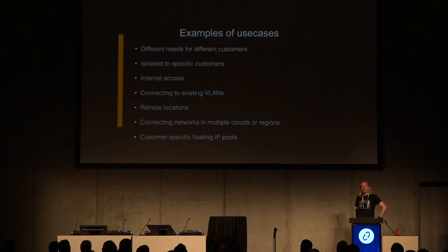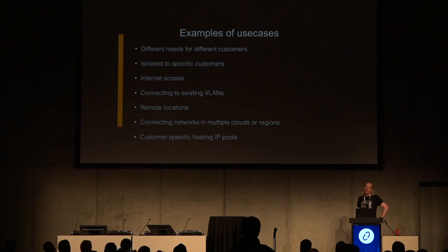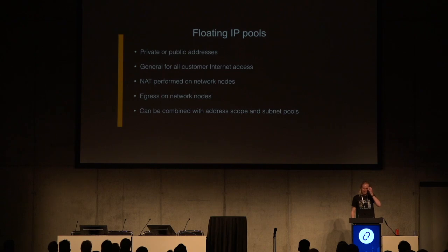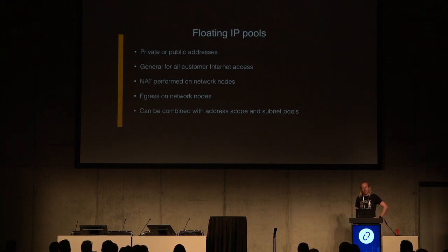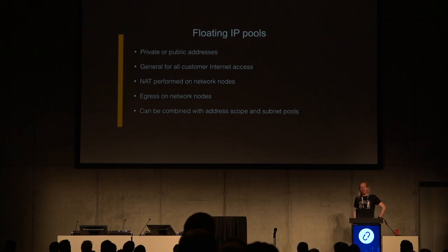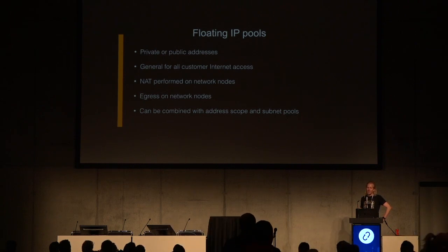Some customers might bring their own network subnet that they have registered through RIPE or any other equivalent association. They might need a customer-specific floating IP pool to be able to use IP addresses from that subnet instead of the generally available floating IP pools. You can use floating IP pools with both private or public addresses. This is the general way that customers use for internet access, and NAT is performed on the network nodes in this case. The traffic egress is on the network nodes as well. It can be combined with address scopes and subnet pools, which I'll get into in a couple of slides.